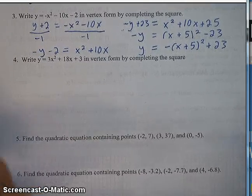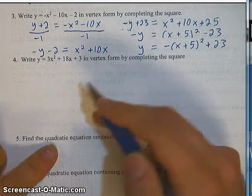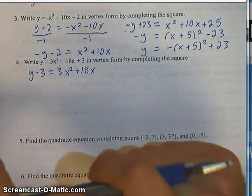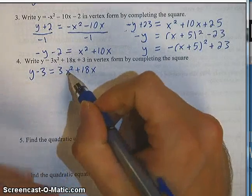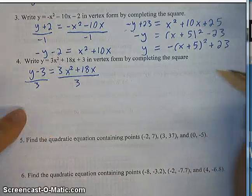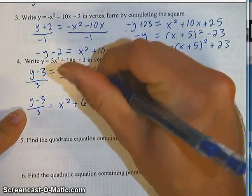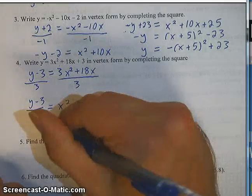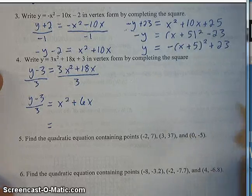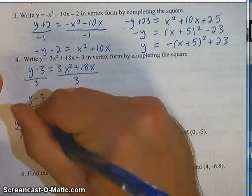One more writing in vertex form: y equals 3x squared plus 18x plus 3. The first step is always the same — get the x squared and the x by themselves. So I'm going to move that 3 to the other side: y minus 3 equals 3x squared plus 18x. I need to get rid of whatever's in front of the x squared to make a perfect square trinomial, so I'm going to divide everything by 3. That gives me y minus 3 over 3 equals x squared plus 6x, because 18 divided by 3 is 6. I want to turn that into a perfect square trinomial, so I take half of 6, squared — half of 6 is 3, 3 squared is 9.